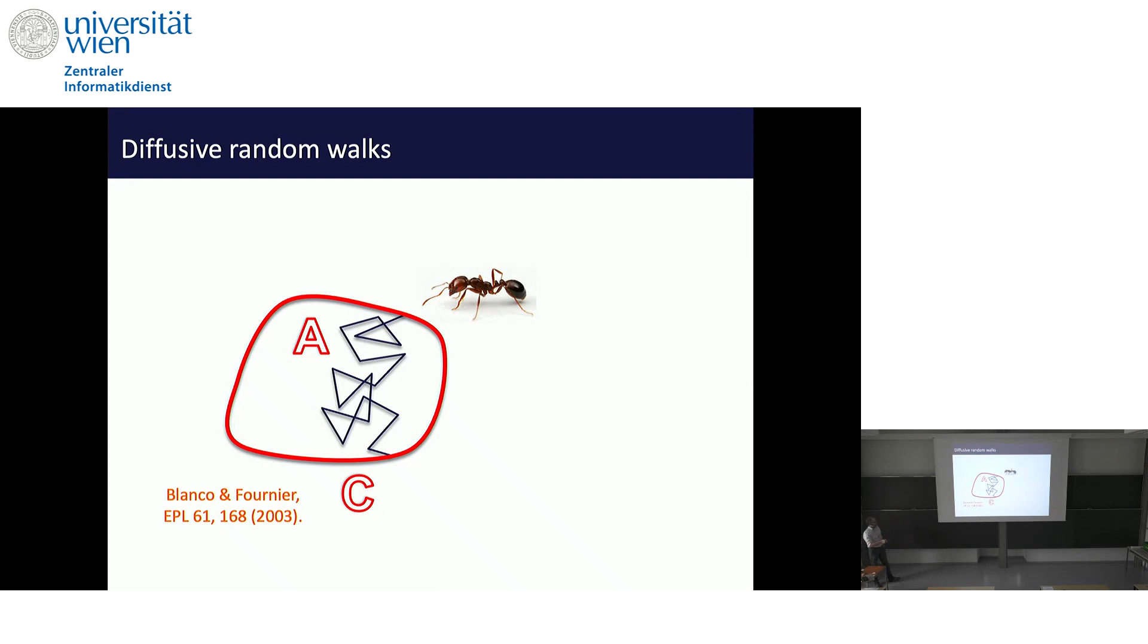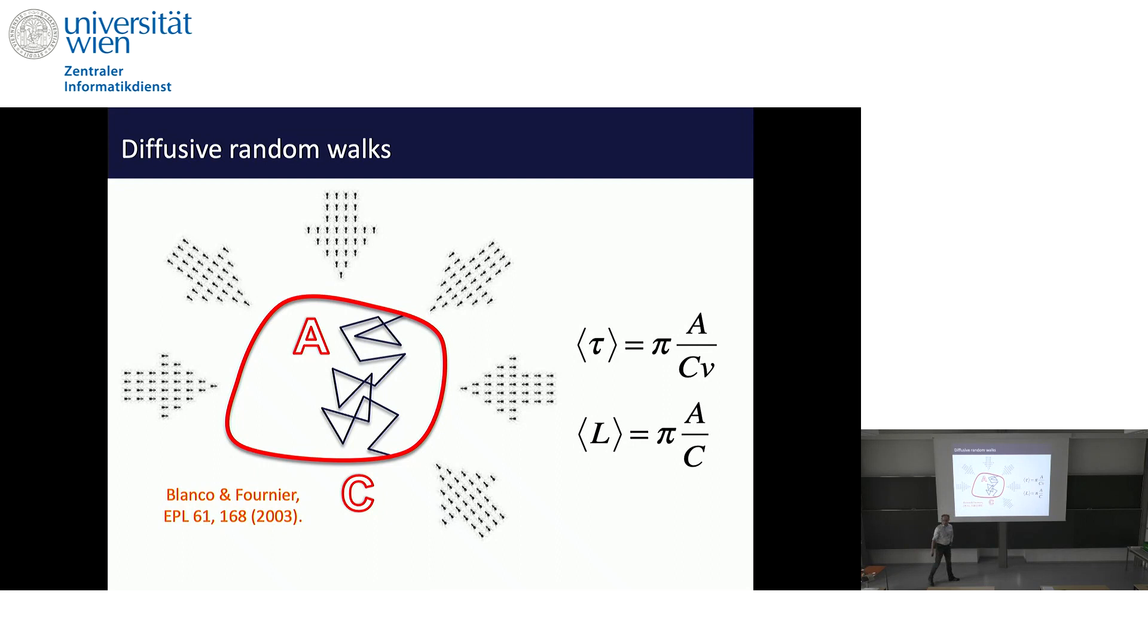They studied this from the random walk picture and said, let's assume that ants come from all sides, isotropic, and they enter this domain. What would be the average length of the path that those ants take when they go through this domain? They came to the conclusion that the average length actually has a very nice geometrical relationship. It's just pi times the area divided by the circumference. Or the average time is the same, only that you have velocity here and down there. In 3D, the same thing holds, only that you have a factor of 4, not a factor of pi.